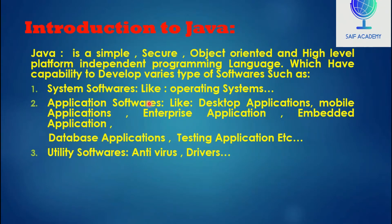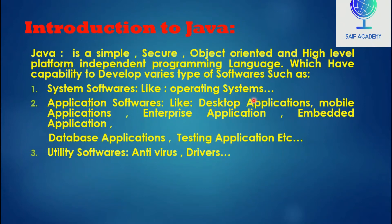Application software run over system software. Types of application software include: desktop application software, mobile application software, interface applications, embedded applications, data-based applications, testing applications, and more. Java programming language is used to develop many types of application software.